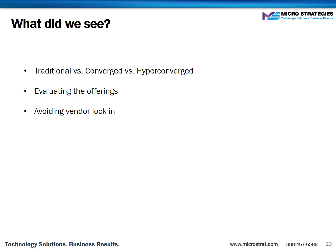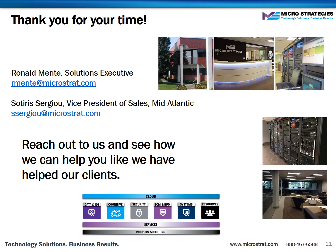So what did we see? We saw the differences between traditional, converged, and hyper-converged offerings. We saw the way in which these offerings can be normalized so that they can be evaluated side by side. And we saw how making smart infrastructure choices you could deploy a more open infrastructure so you're not locked into one particular vendor. I hope you enjoyed this presentation and feel free to reach out to us so we can help you like we help our other clients.